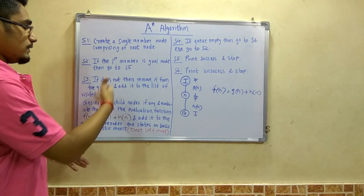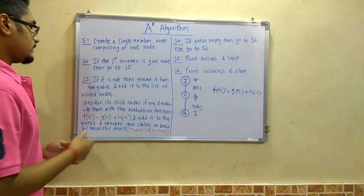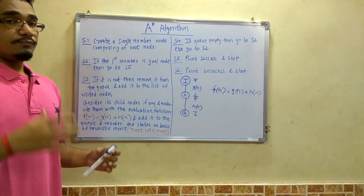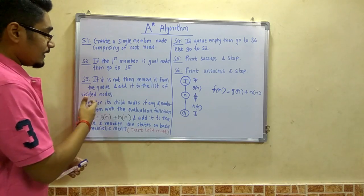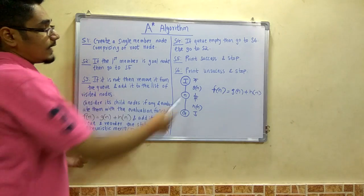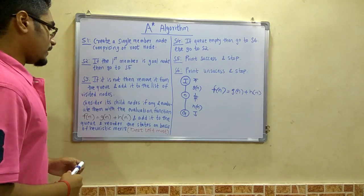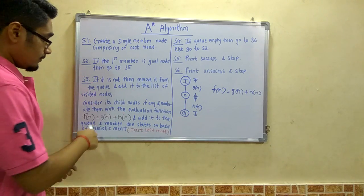If this is not the case, we will consider its children nodes if any are there. We will evaluate them with the evaluation function, F(N) = G(N) + H(N), and add them to the queue.